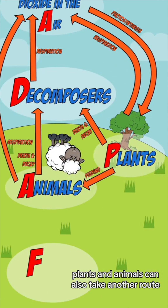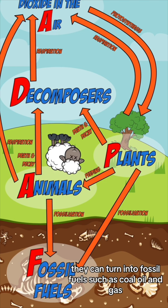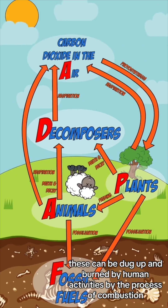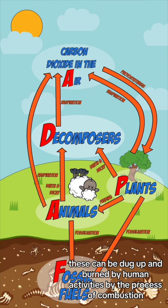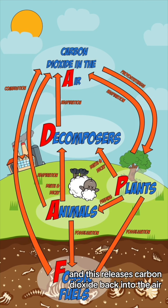Plants and animals can also take another route. If they're exposed to the correct conditions for millions of years, they can turn into fossil fuels such as coal, oil and gas. These can be dug up and burned by human activities by the process of combustion, and this releases carbon dioxide back into the air.